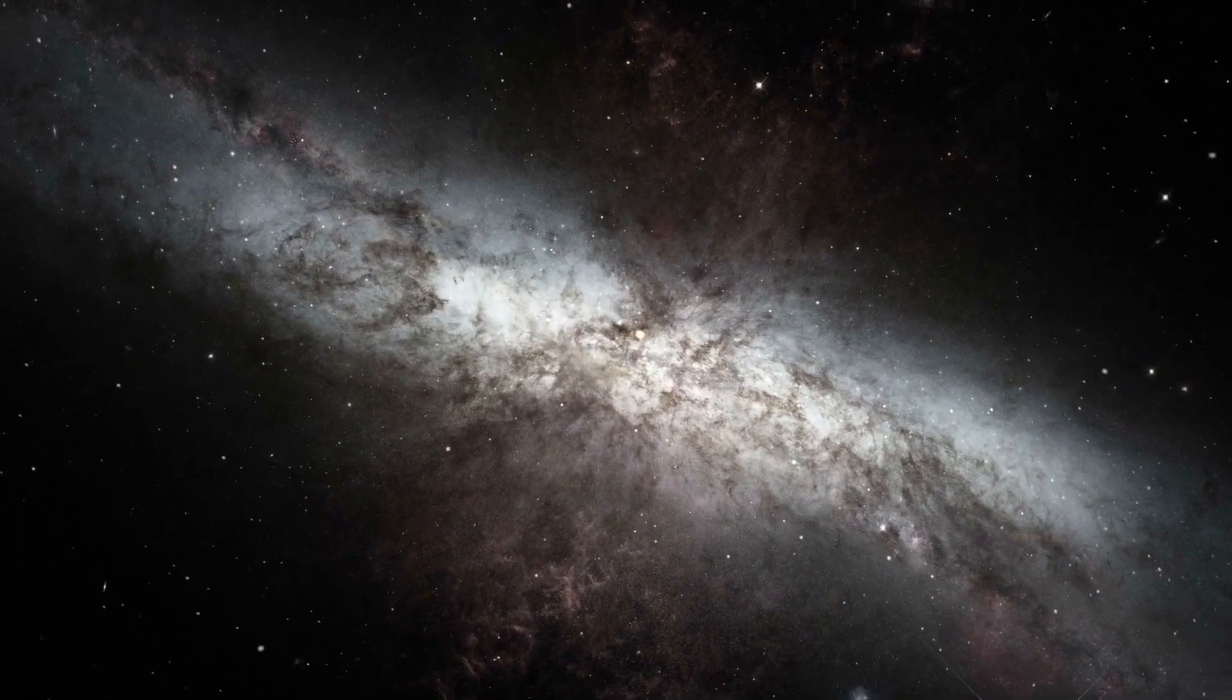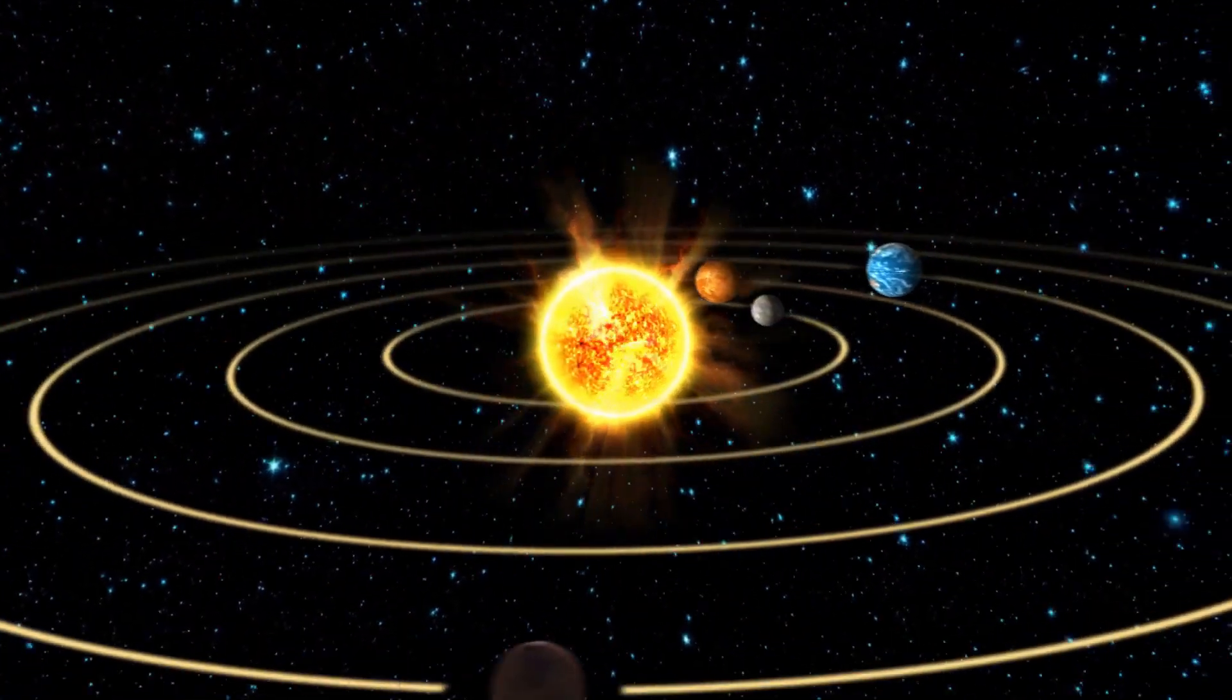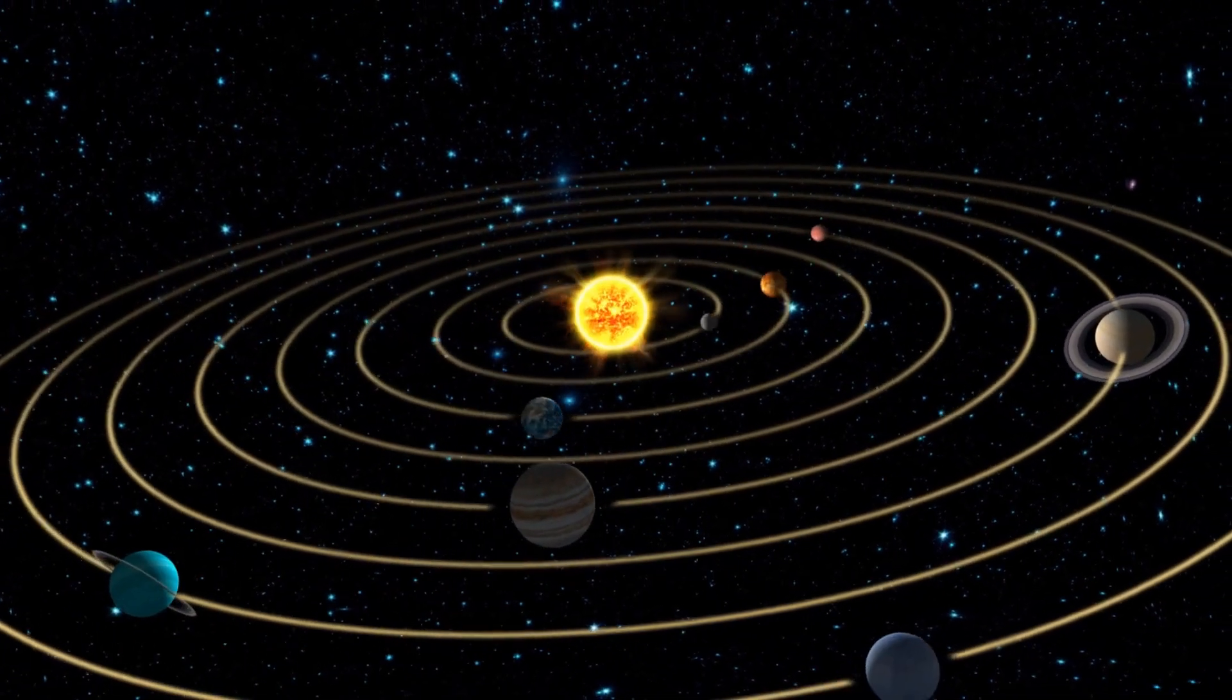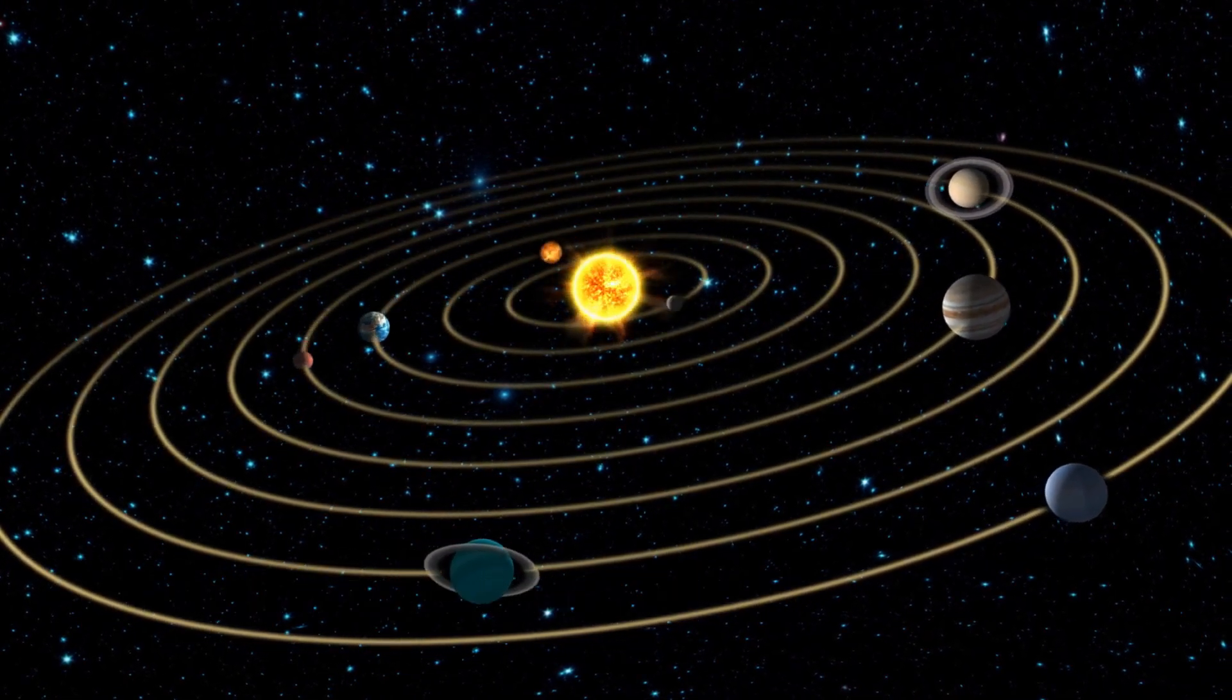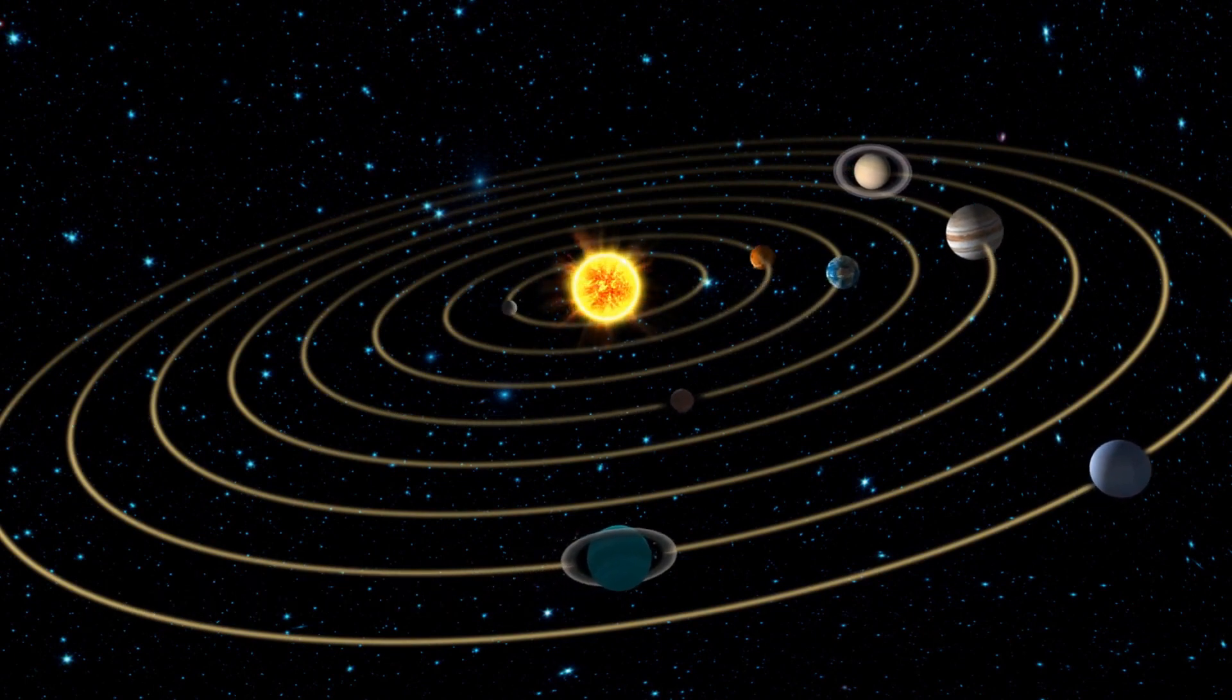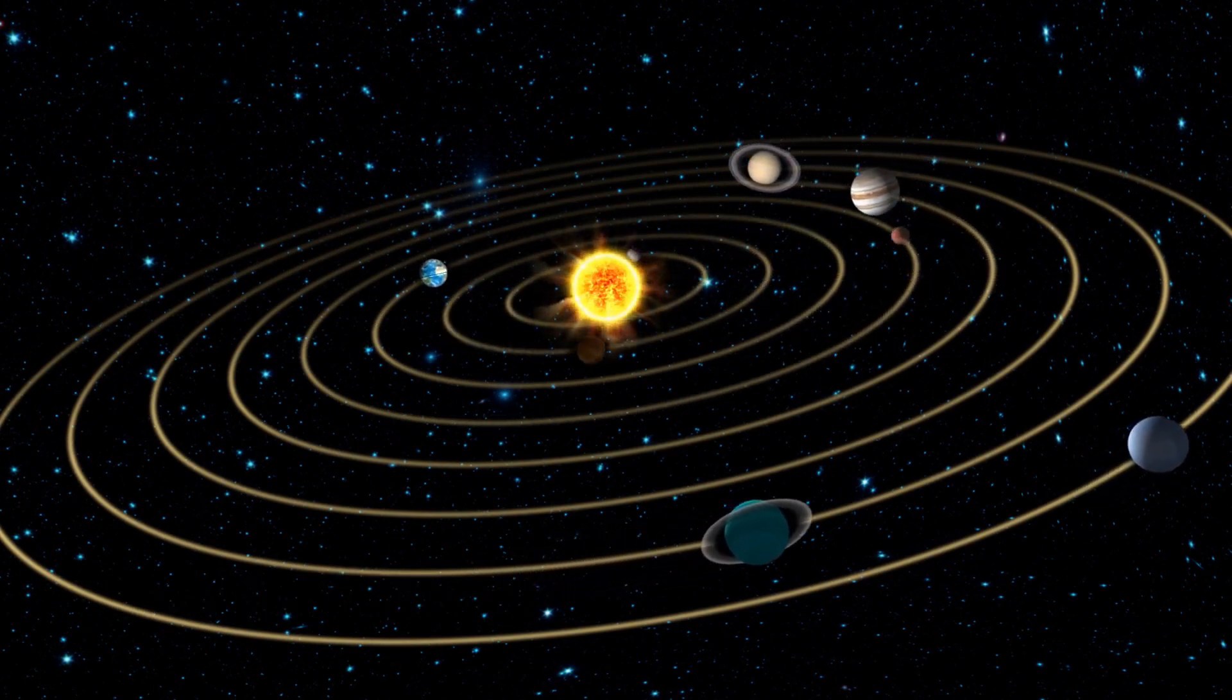In 1728, English physicist James Bradley based a new set of calculations on the change in the apparent position of stars caused by Earth's travels around the sun. He estimated the speed of light at 185,000 miles per second or 301,000 kilometers per second, accurate to about 1% of the real value, according to the American Physical Society.